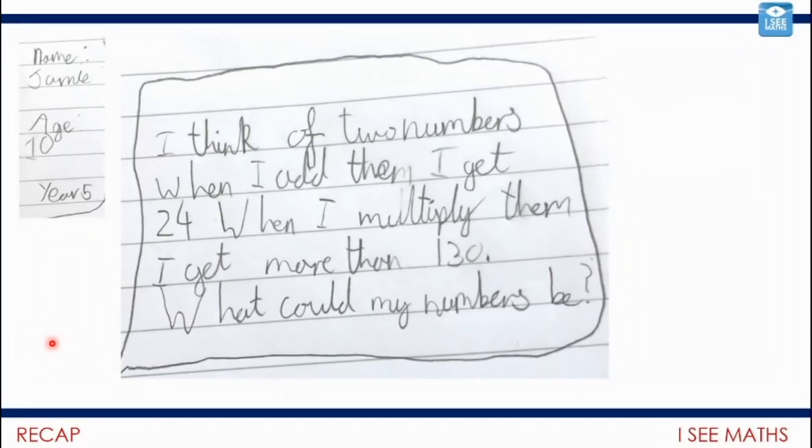I love this pattern that we explored earlier in the week. And again, I just love the example questions that you've managed to write with the different possible answers. This one was from Jamie. I think of two numbers. When I add them, I get 24. When I multiply them, I get more than 130. What could my numbers be?